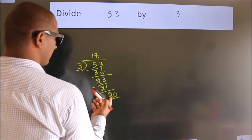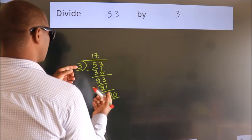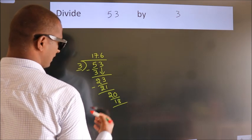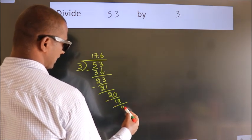A number close to 20 in 3 table is 3 sixths 18. Now, we subtract. We get 2.